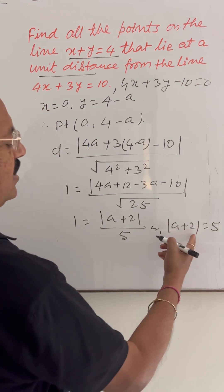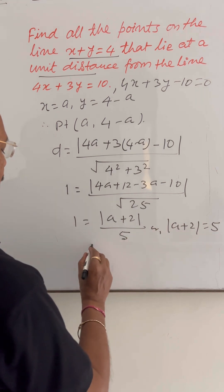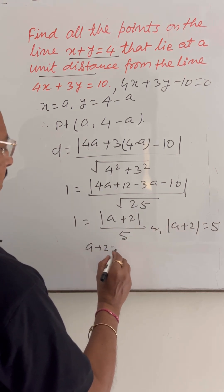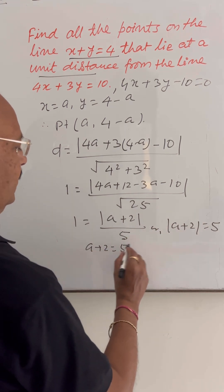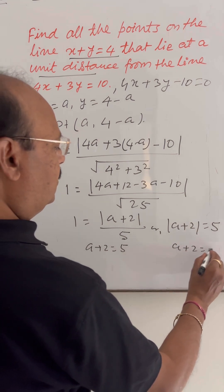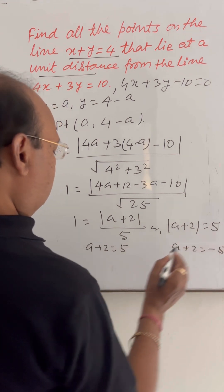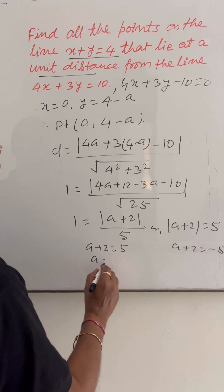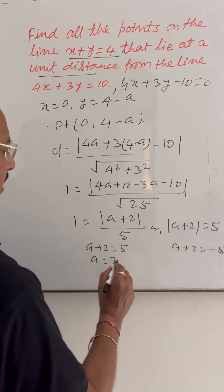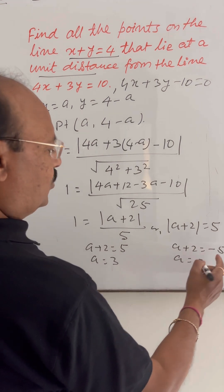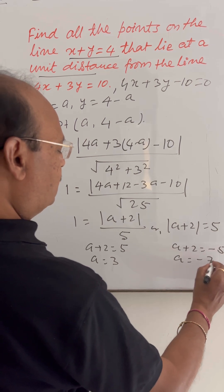So, due to this modulus, we are getting two values. a plus 2 is equal to 5, and a plus 2 is equal to minus 5. So, a is equal to 5 minus 2, that is 3. And here, a is equal to minus 5 minus 2, that is minus 7.